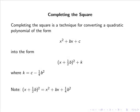Completing the square is a technique for converting a non-factorizable polynomial of the form x squared plus bx plus c into the form x plus a half b, all squared, plus k. Note that x plus a half b, all squared, gives us x squared plus bx plus a quarter b squared, and hence k must equal c minus a quarter b squared.